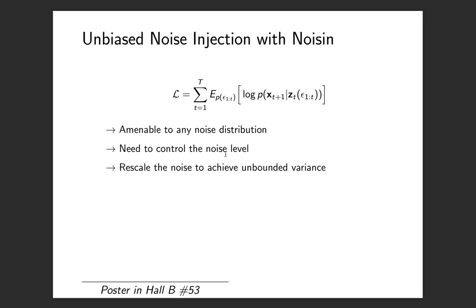In NOISIN you can use any noise distribution. The only restriction on the noise is that the user needs to have control over the noise level. So you need to have control over the variance of your noise. Because there are certain distributions that have bounded variance such as the Bernoulli and the beta, we propose a rescaling method for multiple noise distributions. You can see that in the paper.